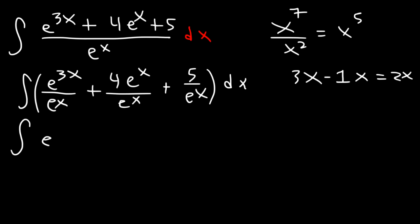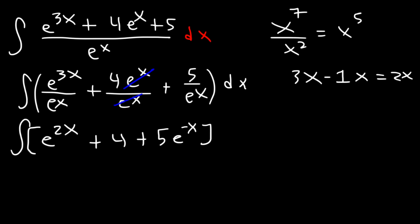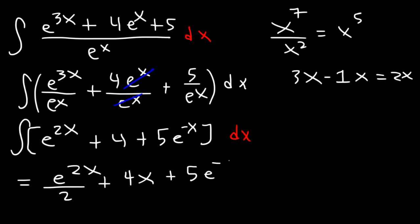For the second term, 4e to the x over e to the x cancels to just 4, since e to the 0 is 1. For the third term, move e to the x to the numerator as e to the negative x, giving 5e to the negative x. Now integrate: the antiderivative of e to the 2x is e to the 2x over 2; the integral of 4 is 4x; and for 5e to the negative x, divide by the derivative of negative x which is negative 1, giving negative 5e to the negative x plus c.